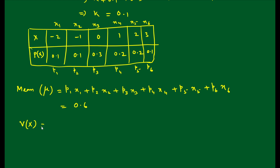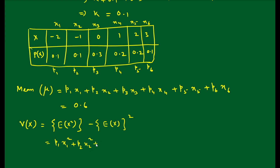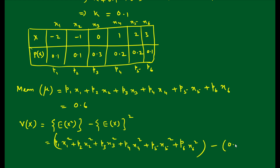Finally we find variance. V(X) = E(X²) − [E(X)]². E(X²) = p1·x1² + p2·x2² + p3·x3² + p4·x4² + p5·x5² + p6·x6², and E(X) = 0.6, so we subtract (0.6)². Substitute all the table values here to calculate E(X²), then subtract (0.6)² to get the variance.